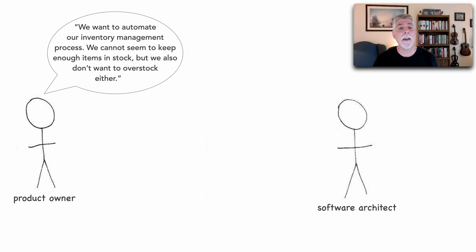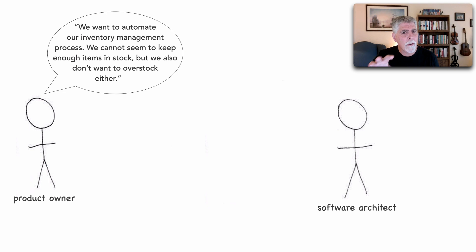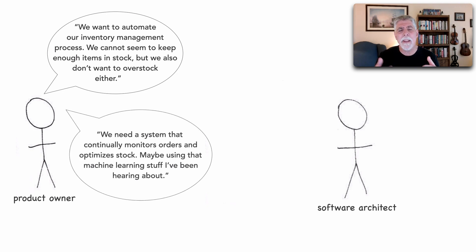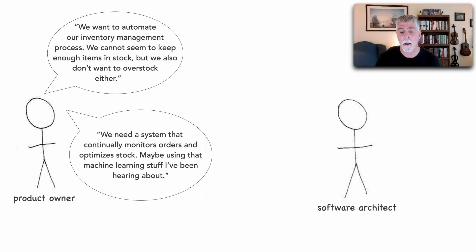The product owner explains: we want to automate our inventory management process. We cannot seem to keep enough items in stock, but we also don't want to overstock things either. We need a system that continually monitors orders and optimizes the stock, maybe using that machine learning stuff I've been hearing about.